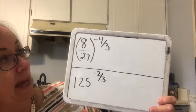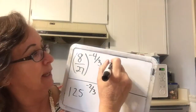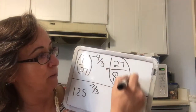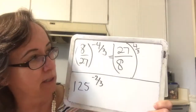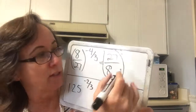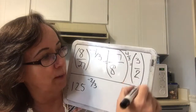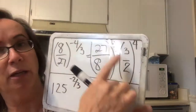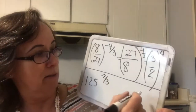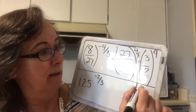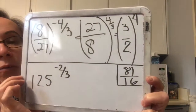On this board we have a fraction raised to a negative exponent. I'm going to flip the whole fraction and make it 27 over 8 raised to positive 4/3. I take the cubic root of both numbers first — the cubic root of 27 is 3 and the cubic root of 8 is 2. Then I raise both to the fourth power: 3 to the fourth is 81 and 2 to the fourth is 16. So the answer is 81 over 16.